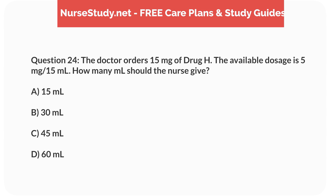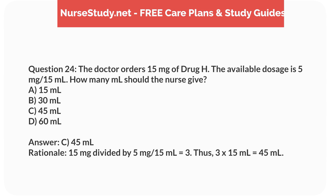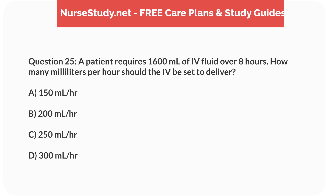Question 24. The doctor orders 15mg of drug H. The available dosage is 5mg per 15mL. How many mL should the nurse give? a. 15mL, b. 30mL, c. 45mL, d. 60mL. Answer: c. 45mL. Rationale: 15mg divided by 5mg per 15mL equals 3. Thus, 3 times 15mL equals 45mL.